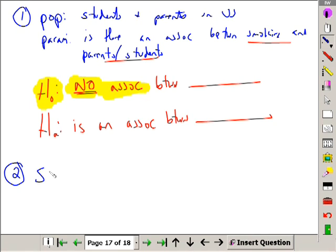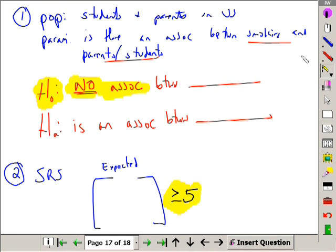Step two. SRS, I want you to write this. Expected, and we're going to have a matrix here. And I'll talk about what's going to go inside that matrix in a moment. All expected values have to be greater than or equal to five. This is real important, and AP does like to try to trick you here. All our expected values have to be greater than or equal to five. Expected values will be given by the calculator. And don't forget, chi-squared test of association.